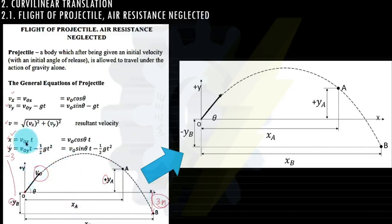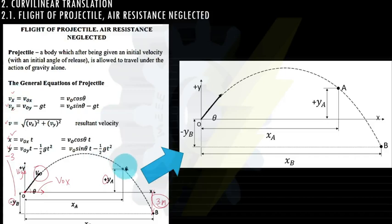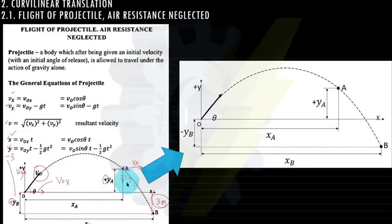Next, v sub o x is the x-component of the initial velocity, and v sub o y is the y-component. Then vx and vy are the velocity components at the final position of the projectile. Note the sign convention for velocity: if vy is directed downward, it is negative. If the initial velocity component is upward, it is positive; if downward, the component vy is negative.